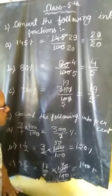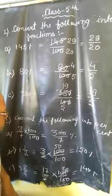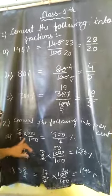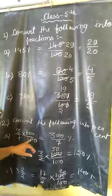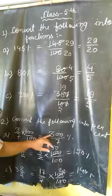Question number 2: Convert the following into percent. Here 3 upon 7, to convert to percent, we multiply by 100. After multiplication, it will be 300 upon 7.